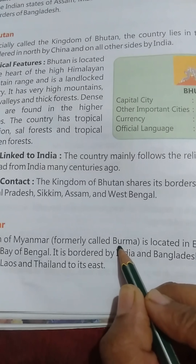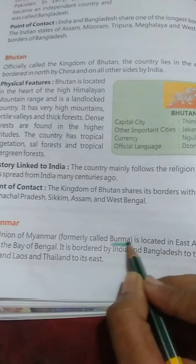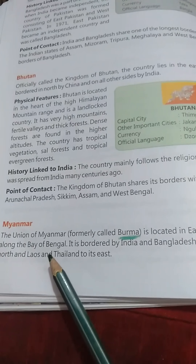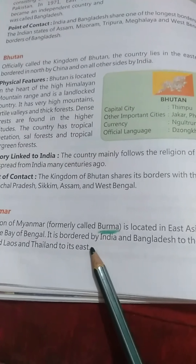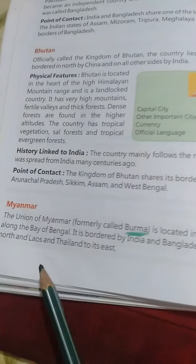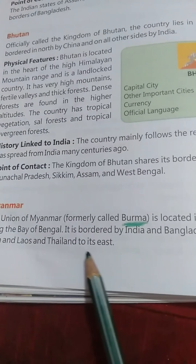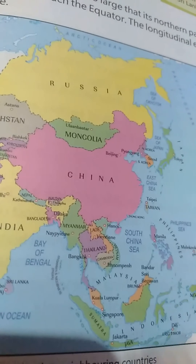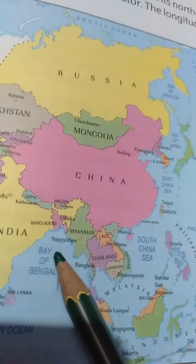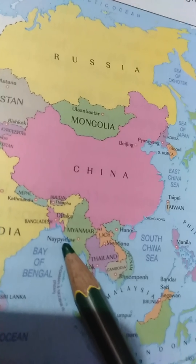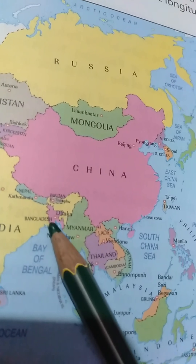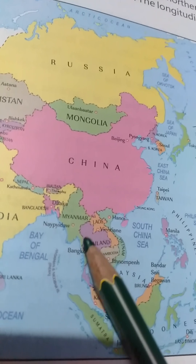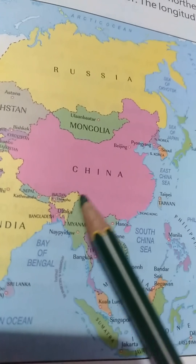Good morning. Let's start reading about the next neighboring country of India, that is Myanmar. We already have read five, and this is the sixth one. Myanmar has a three-color flag with a star in the center. The capital city is Naypyidaw, other important cities are Mandalay and Yangon, currency is Kyat, and the official language is Burmese, because it was formerly known as Burma.